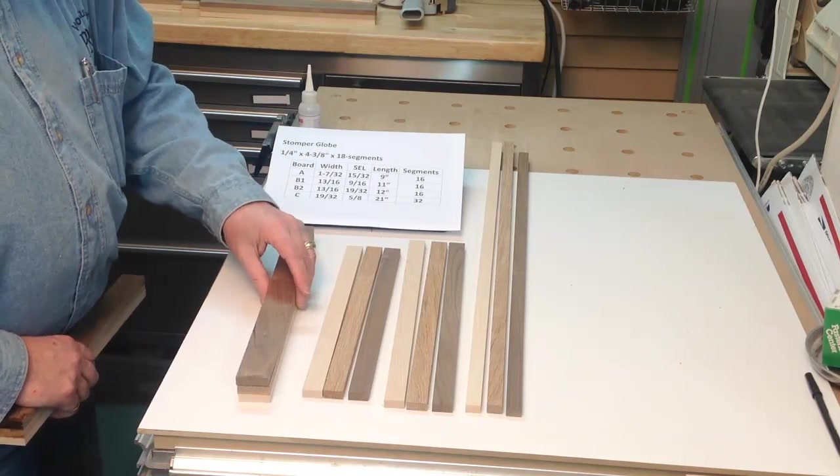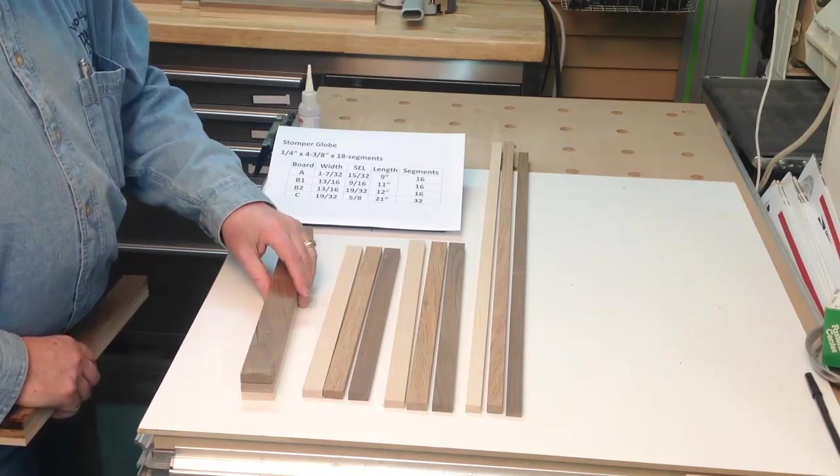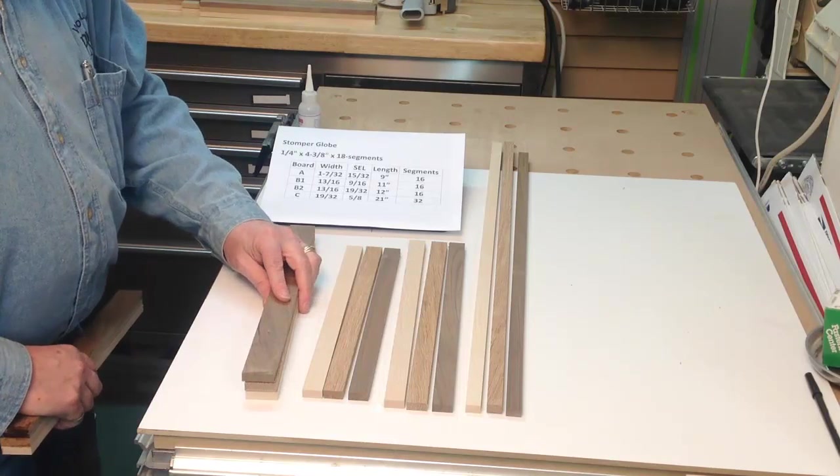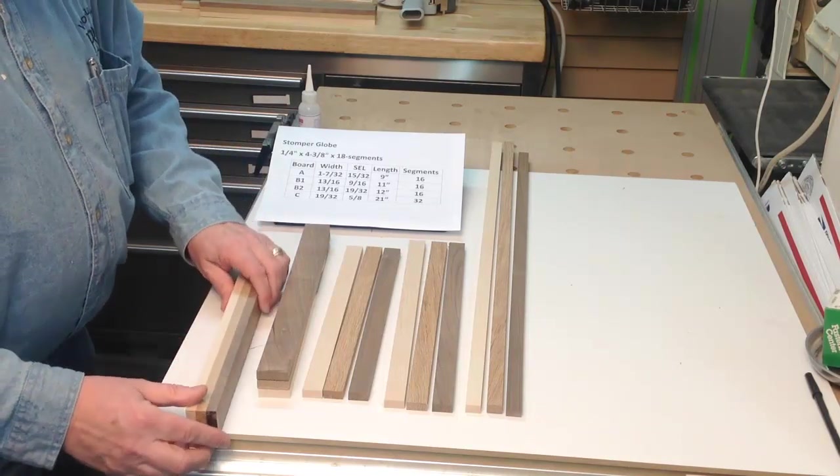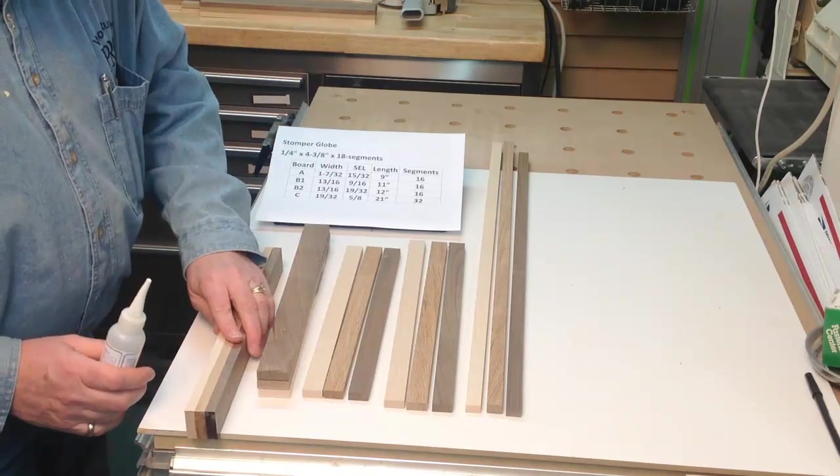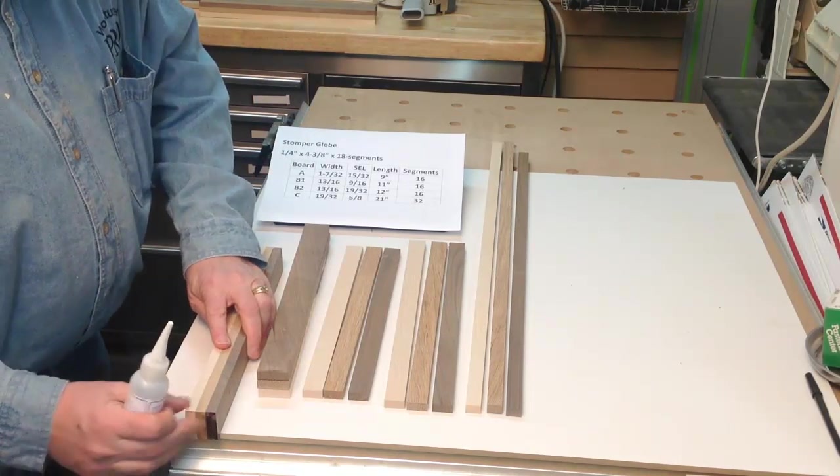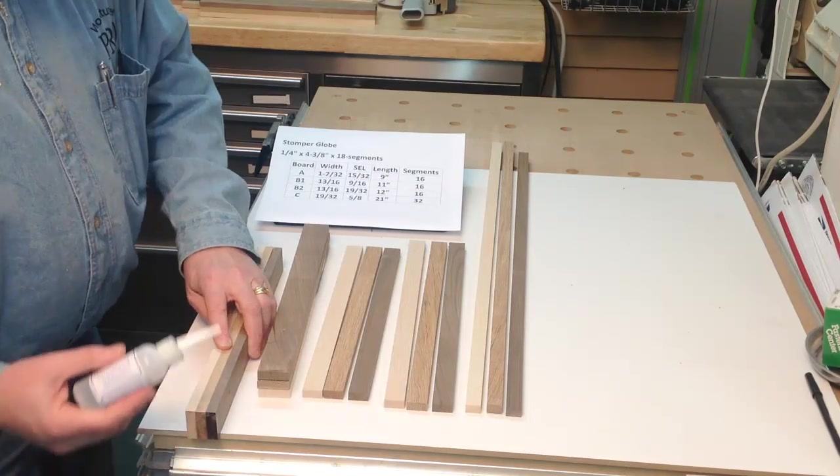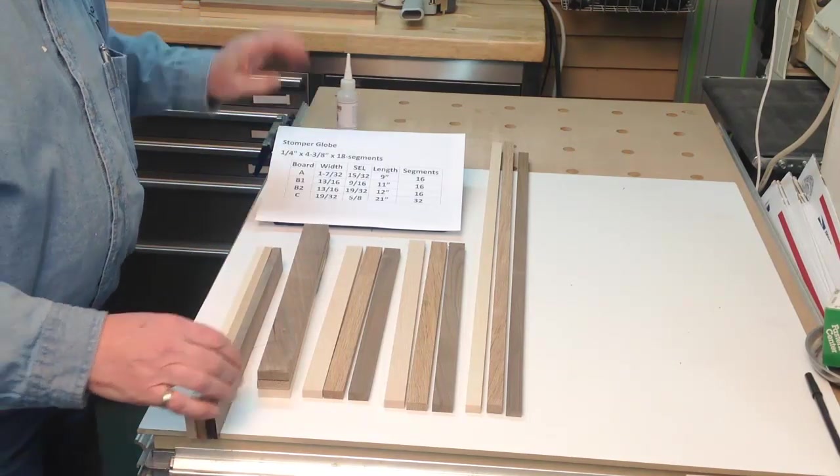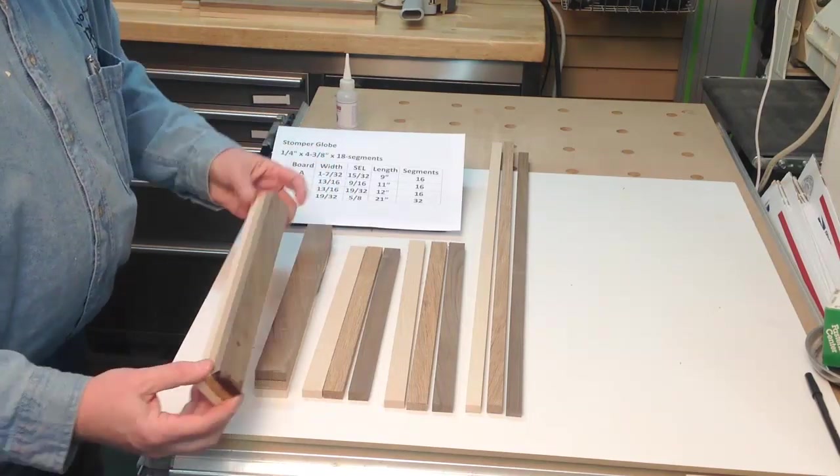And so what I've done to make this easier, I took those three pieces and I laid them on the edge and made sure that they're all clamped, just finger tight is fine, and put a little thin CA glue right on the end. And what that does is that's going to make them function as if it was one board.